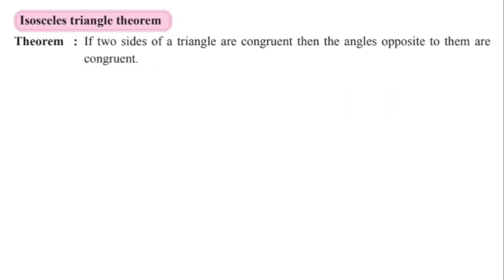In this theorem, there is a statement. The statement of the theorem is: if two sides of a triangle are congruent, then the angles opposite to them are also congruent.